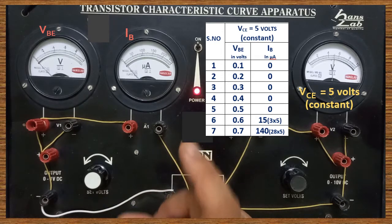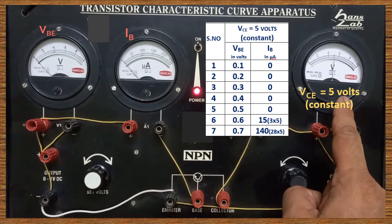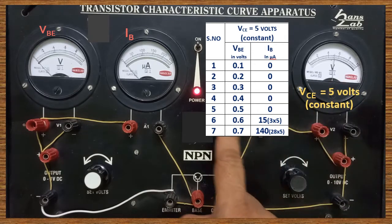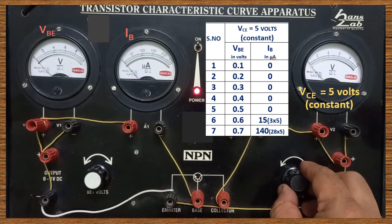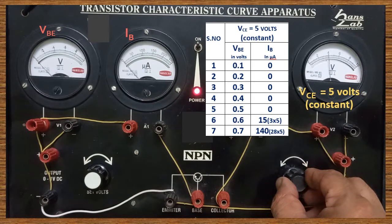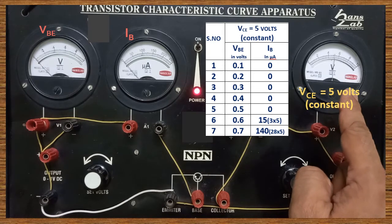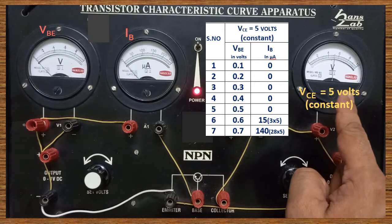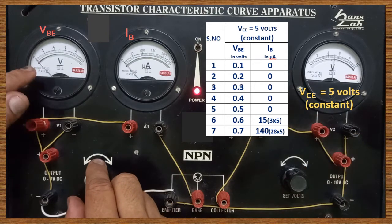To draw the input characteristics curve, first we have to keep the value of VCE as constant. By using the voltage adjuster, slowly increase it until it is set to 5 volts across collector and emitter. This value must be kept constant throughout the experiment and should not be altered.